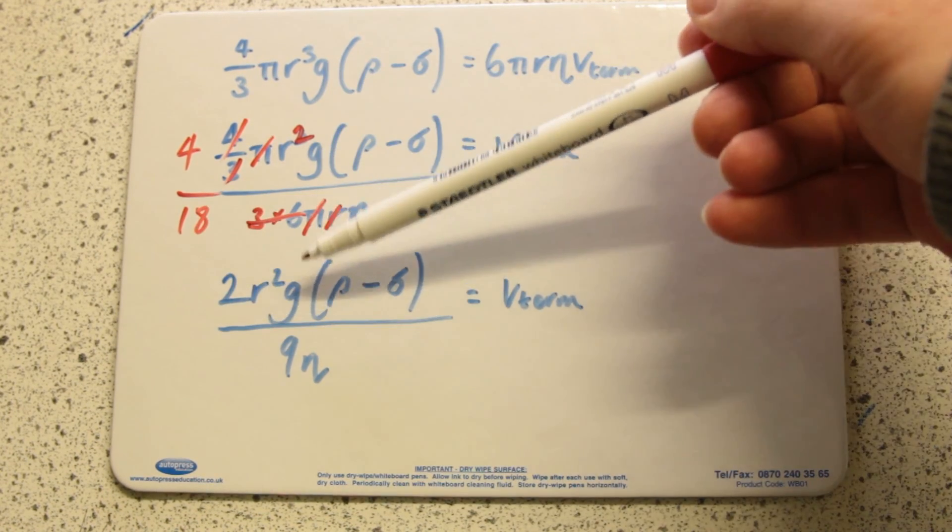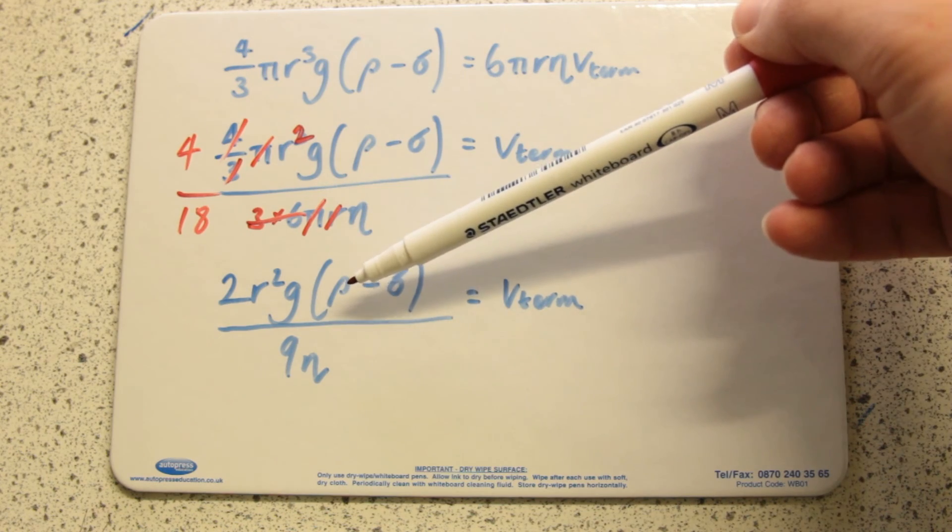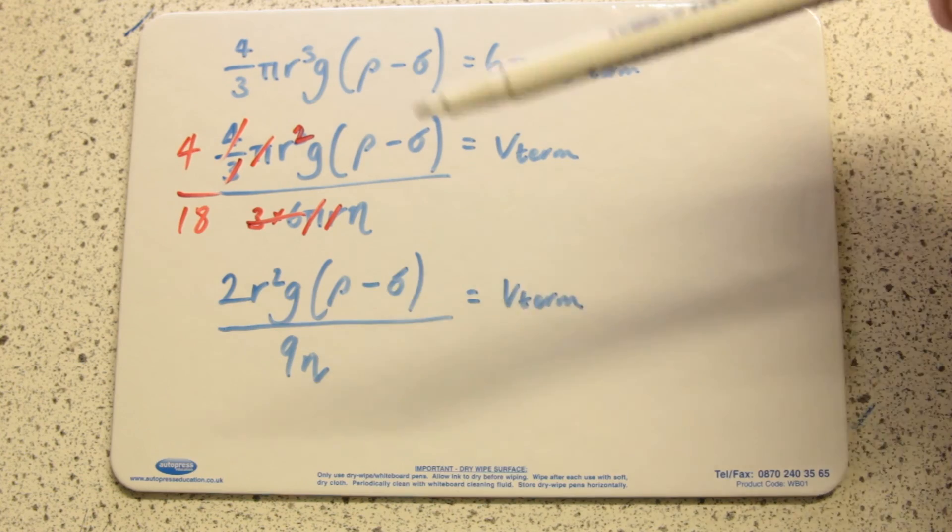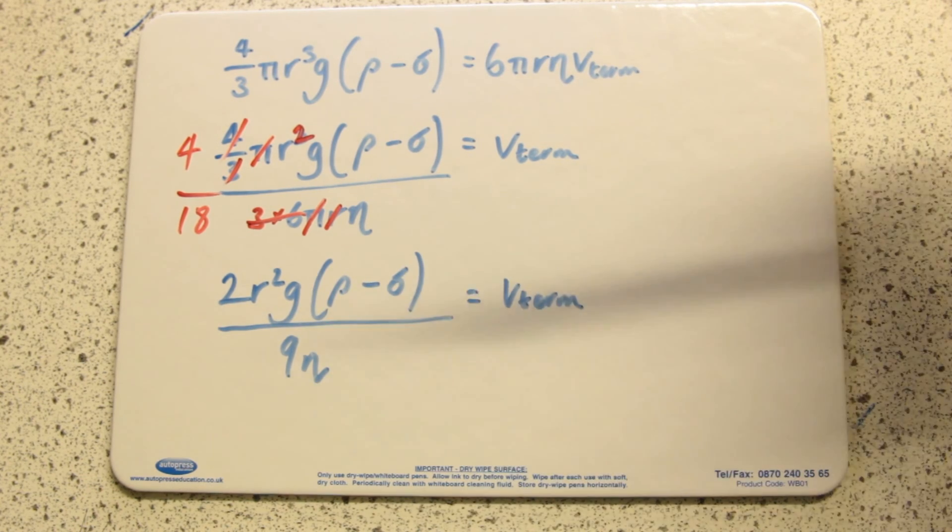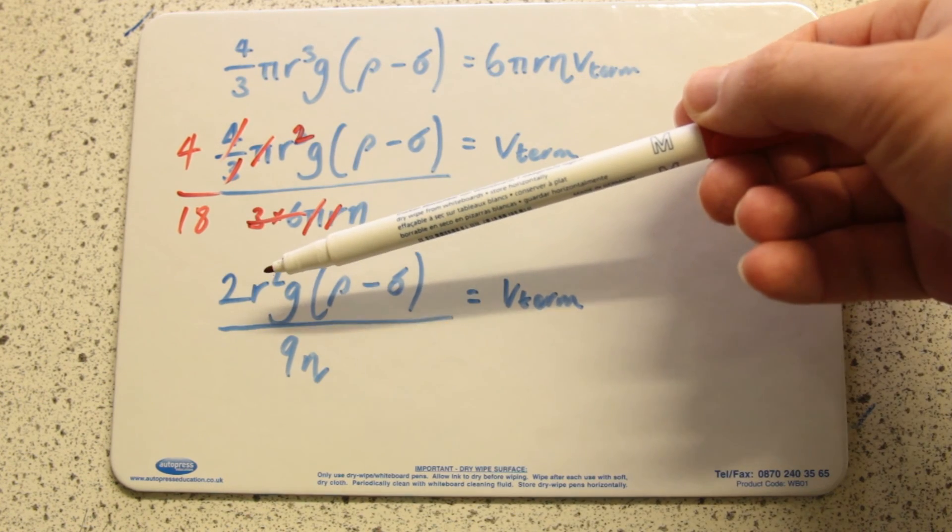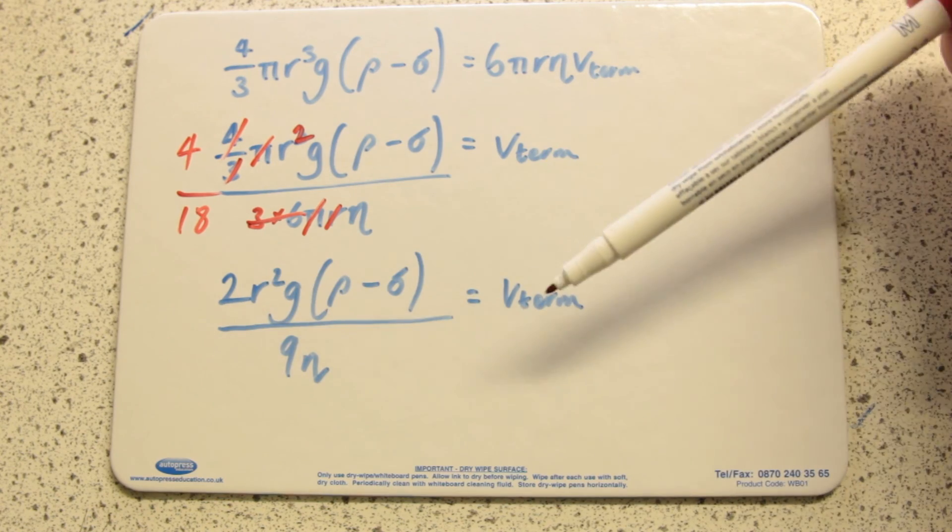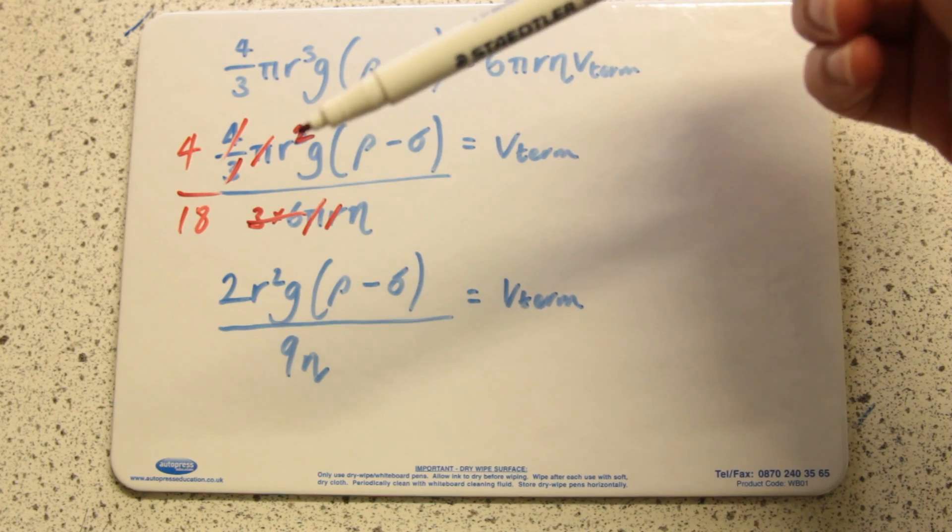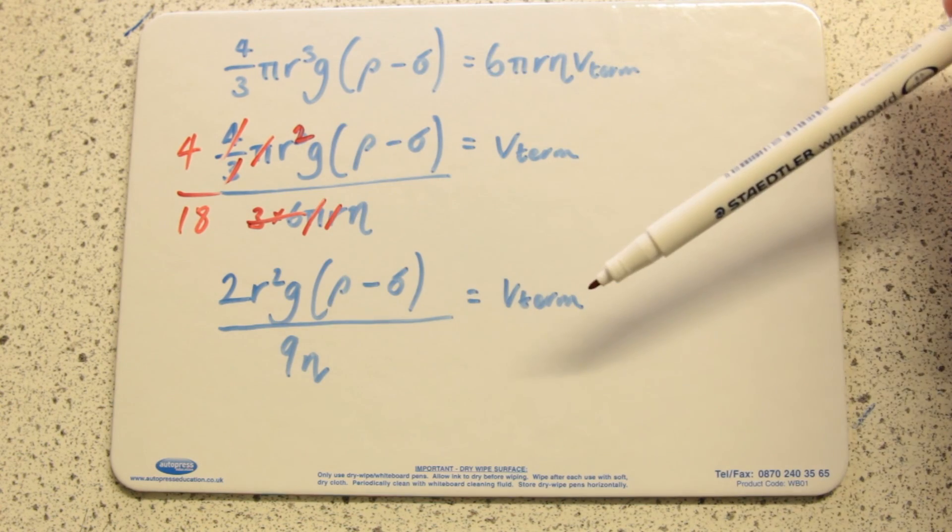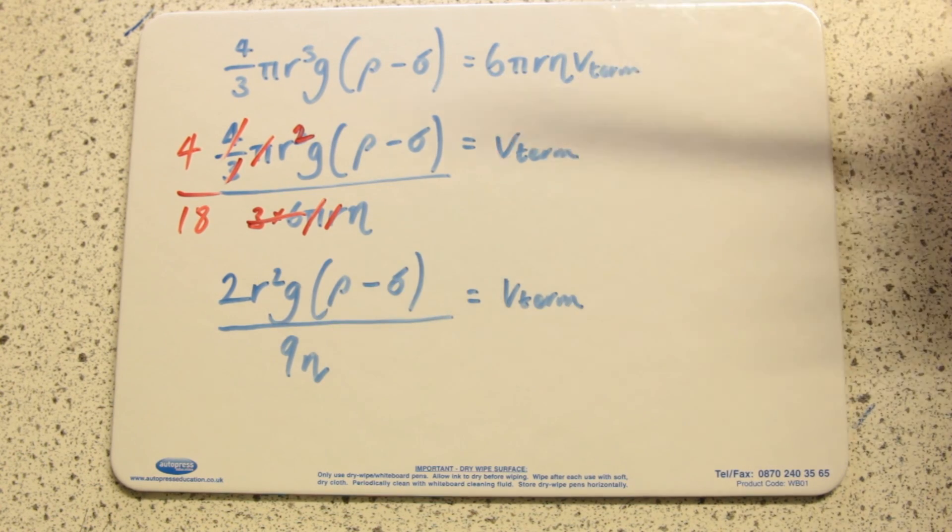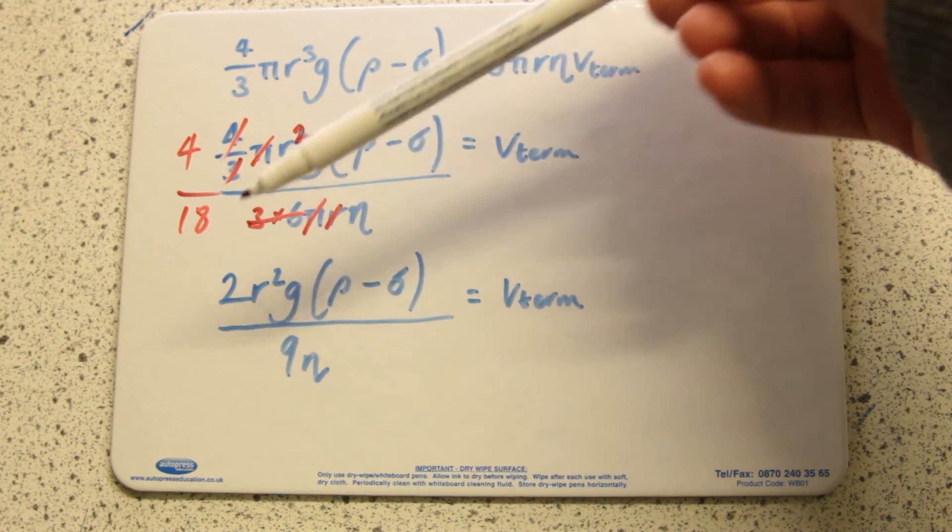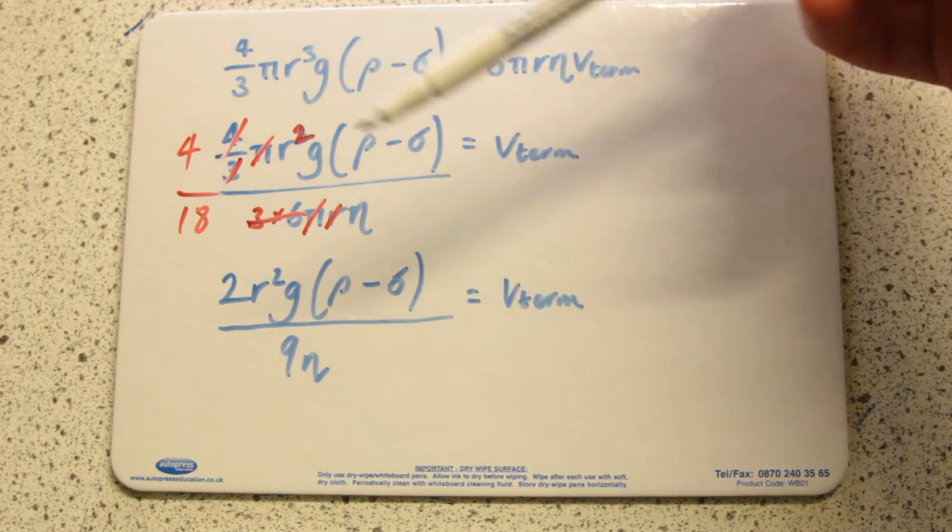You can see then that a smaller sphere will have a smaller terminal velocity. A larger ball, larger radius, will have a larger terminal velocity. That's kind of counterintuitive, isn't it? And it's a square relationship.